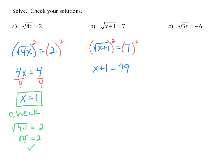We subtract 1 from both sides to get x equals 48. We want to check our answer by plugging the value back into the original equation for x, to get the square root of 48 plus 1 is equal to 7. The square root of 48 plus 1 is the same thing as the square root of 49, which does equal 7.